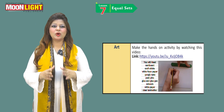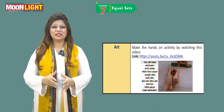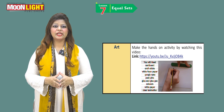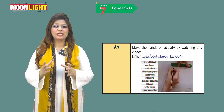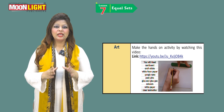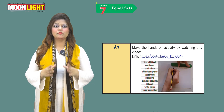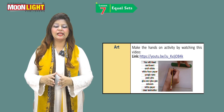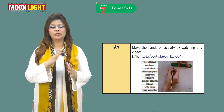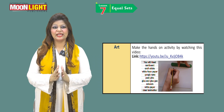For the art activity, you are going to make an equal-to symbol. For this you need a cardboard, craft sticks, white foam paper, googly eyes, push pin, glue, and glue gun. You are also going to use scissors, white paper, and clean lamination. You will have this kind of bold equal-to symbol on which you are going to place numbers on both sides.